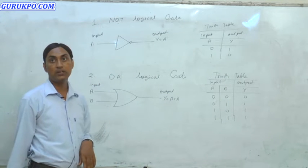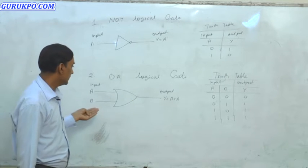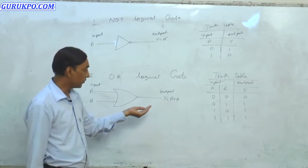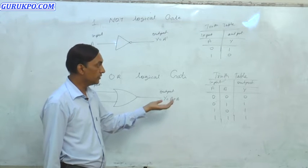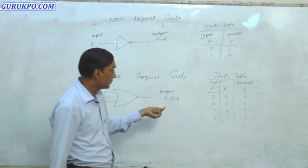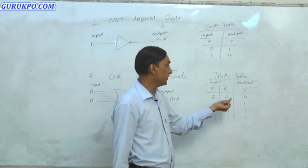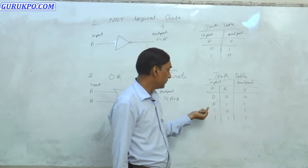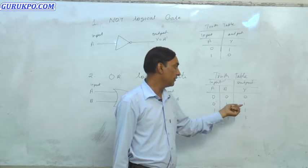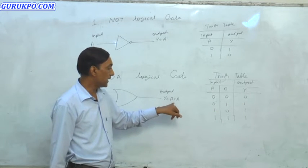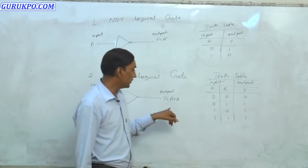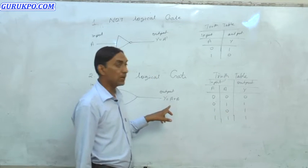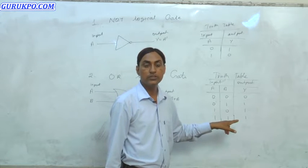The second logic gate is the OR logic gate. This is the symbol of the OR logical gate. There are two inputs, A and B, and the output is Y. The formula is Y = A + B. Truth table: if inputs are 0 and 0, output is 0; if inputs are 0 and 1, output is 1, because 0 + 1 = 1; if inputs are 1 and 0, output is 1; if inputs are 1 and 1, output is 1.